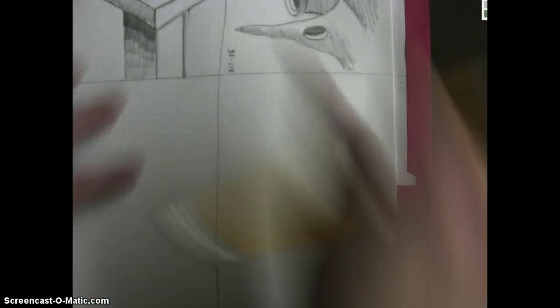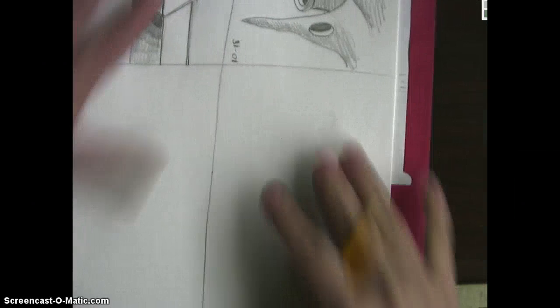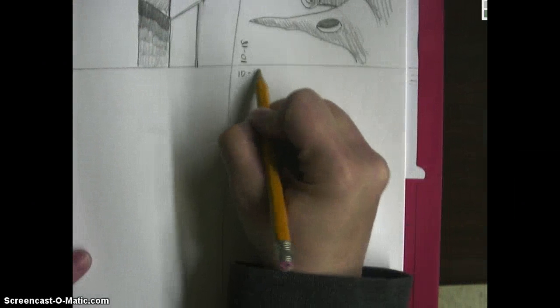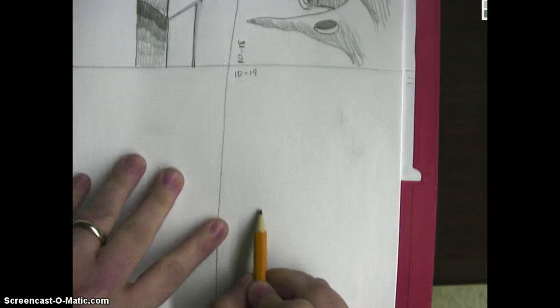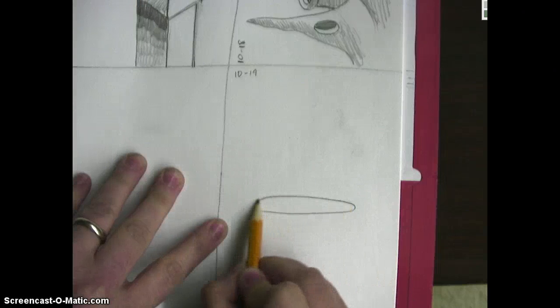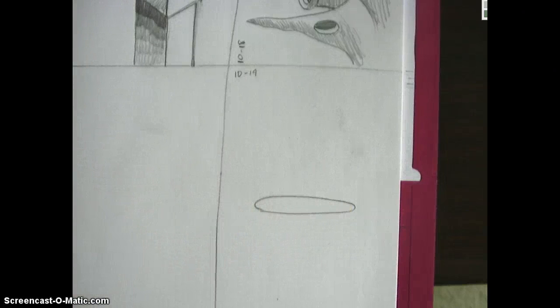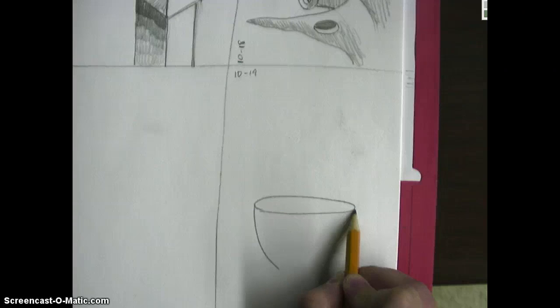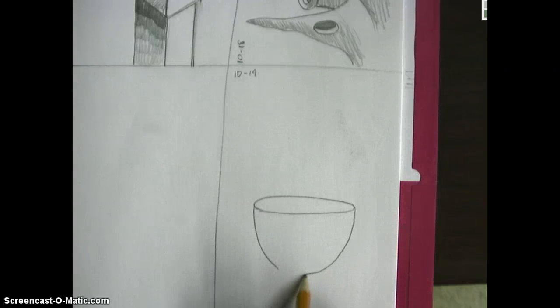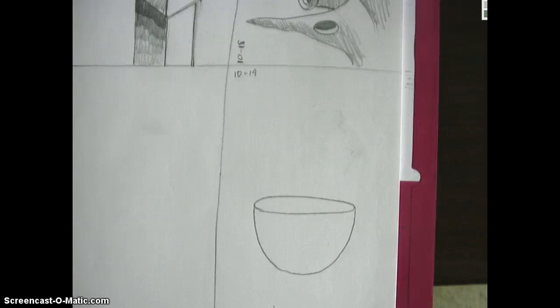Don't forget to put the date on your entry. There we go, 10-19. And let's get started. We're going to start with a foreshortened circle, which is basically just a squashed oval. And then we're going to bring it down to create the bottom of the egg. So we're going to come down in a curve on both sides, and then attach the bottom. So there is the bottom of your egg.